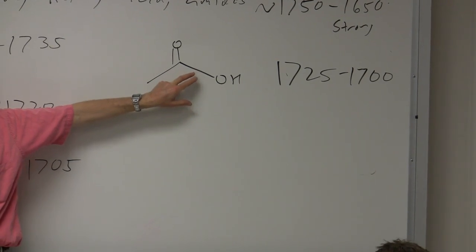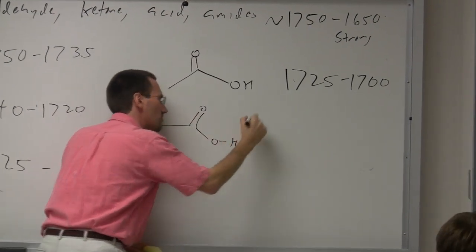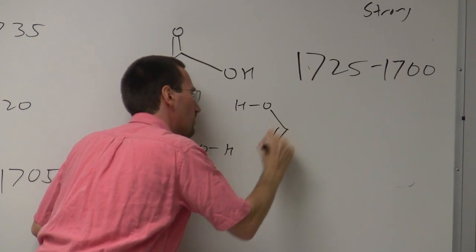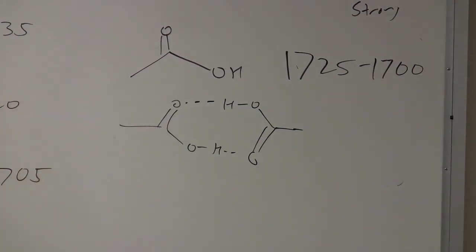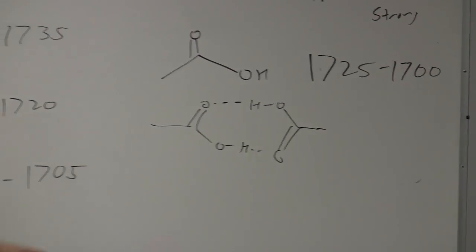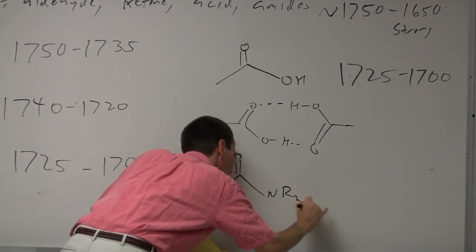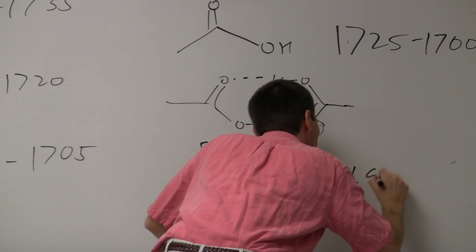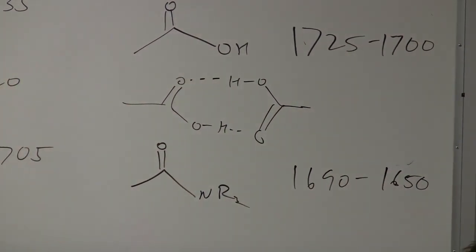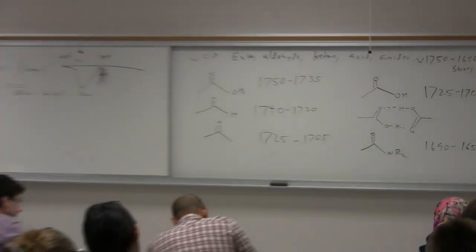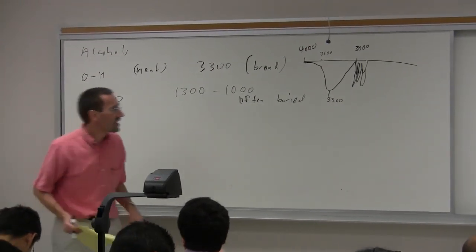Carboxylic acids love hydrogen bonding. You get very nice hydrogen-bonded dimer stretches that produce broad, non-specific CH stretches covering the whole region from about 3,500 to about 2,500 cm⁻¹. Amides are typically at a little bit lower frequency — about 1,690 to 1,650 cm⁻¹. We're talking primary amides with two NHs, secondary amides with one NH, and tertiary amides with no NHs.